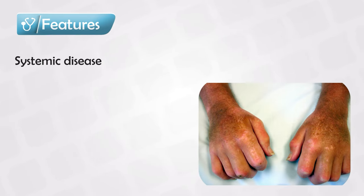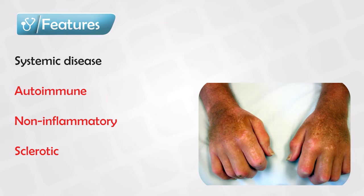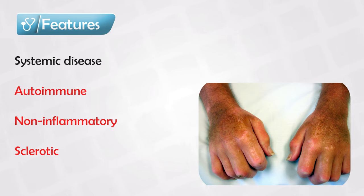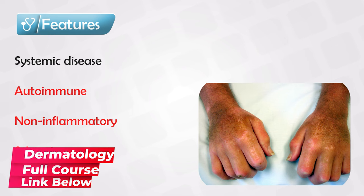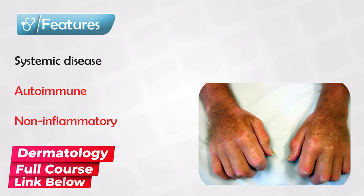Scleroderma is a systemic condition that affects all the body, mainly the skin. The patient will have mainly skin symptoms, but there will also be visceral or intra-abdominal symptoms as well. It is described as both an autoimmune, non-inflammatory, and sclerotic condition. There will be widespread activation of the CD4 lymphocytes, which stimulates fibroblast growth, resulting in collagen deposition and fibrosis all over the body.